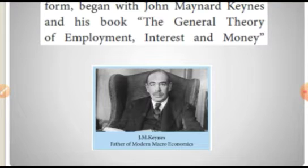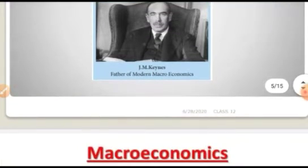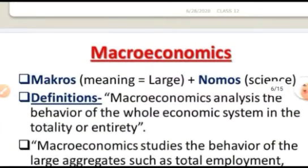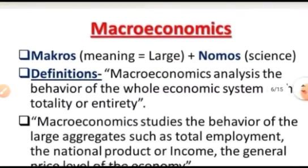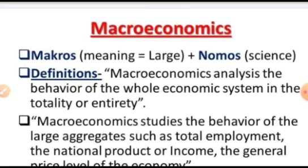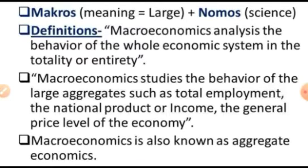Who is the father of modern macroeconomics? J.M. Keynes. The word macro is derived from the Greek word macros and nomos. Macros means large, nomos means signs. One definition says macroeconomics analyzes the behavior of the whole economic system in its totality or entirety — covering total employment, national product, and general price level of the economy. Macroeconomics is otherwise called aggregate economics or income theory.